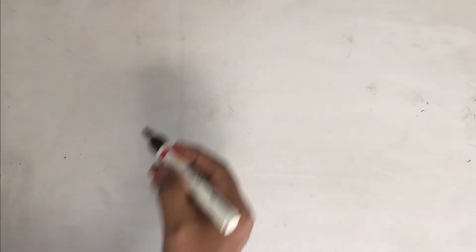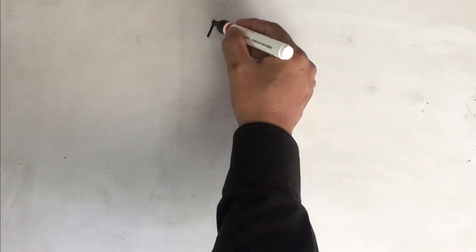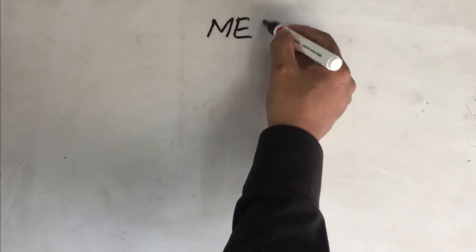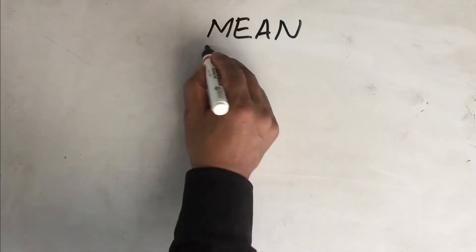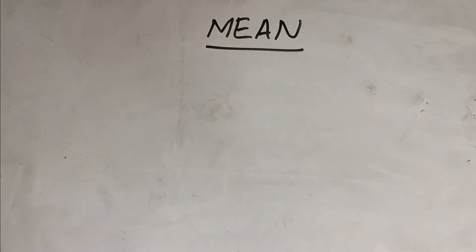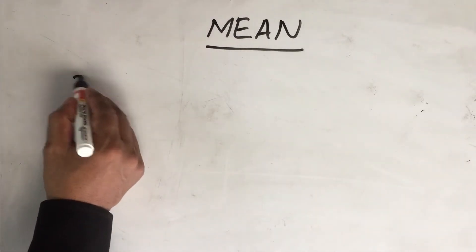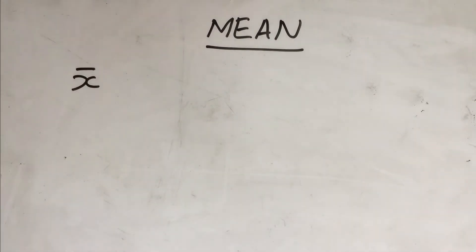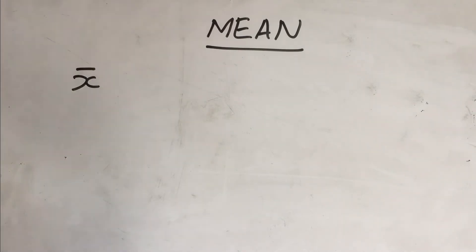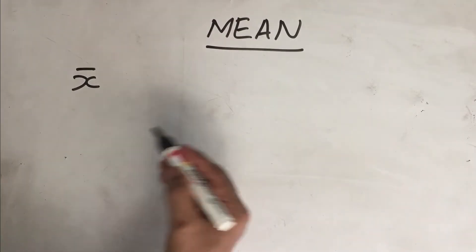This is what we are going to discuss in measures of central tendency. There are three measures of central tendency: mean, median, and mode. We begin with understanding what is meant by mean. Mean is denoted by x-bar. Let us consider the marks that you have got in the last examination.